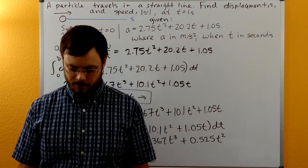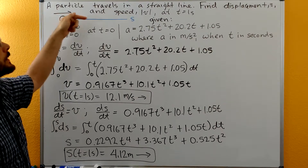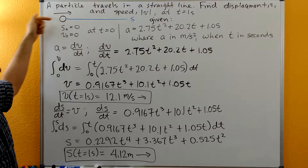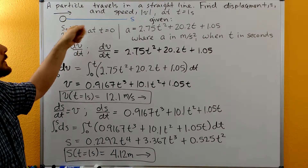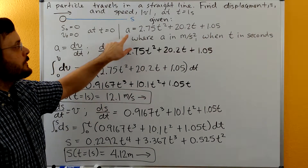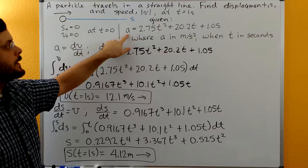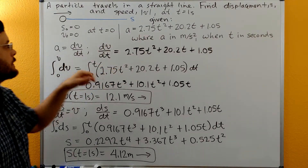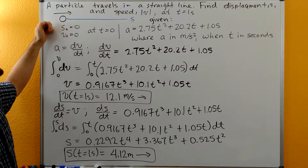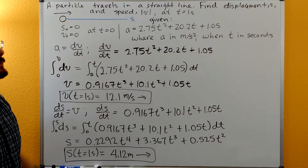Hi. Welcome to the Dynamics Tutorials. With this problem, we have a particle that's undergoing straight line motion. We want to find the displacement s along this blue path, and then we want to find the speed v at time equal to one second. We're given a non-constant acceleration, a as a function of time, and we're also given that the initial displacement is zero and the initial velocity is zero when time is zero.